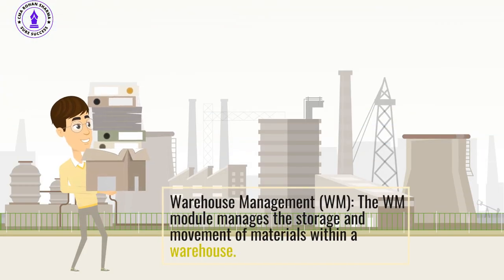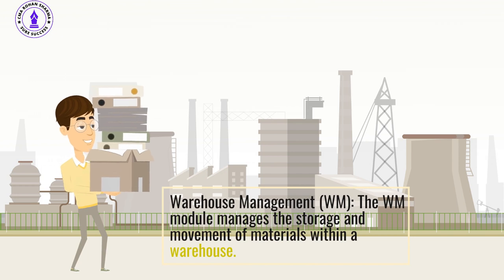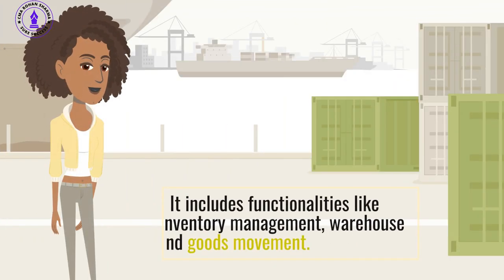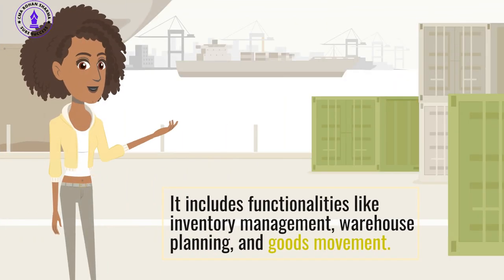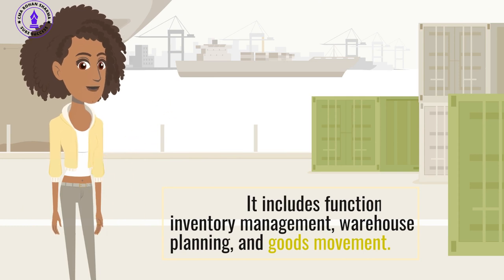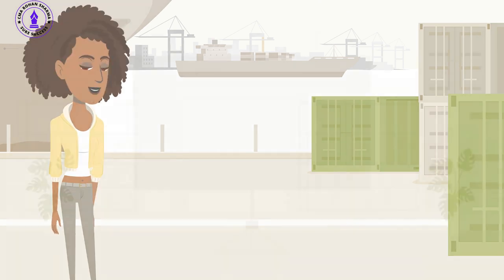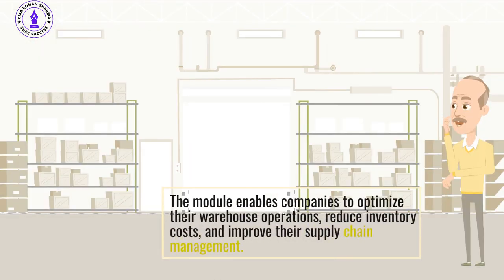Warehouse Management (WM): The WM module manages the storage and movement of materials within a warehouse. It includes functionalities like inventory management, warehouse planning, and goods movement. The module enables companies to optimize their warehouse operations, reduce inventory costs, and improve their supply chain management.